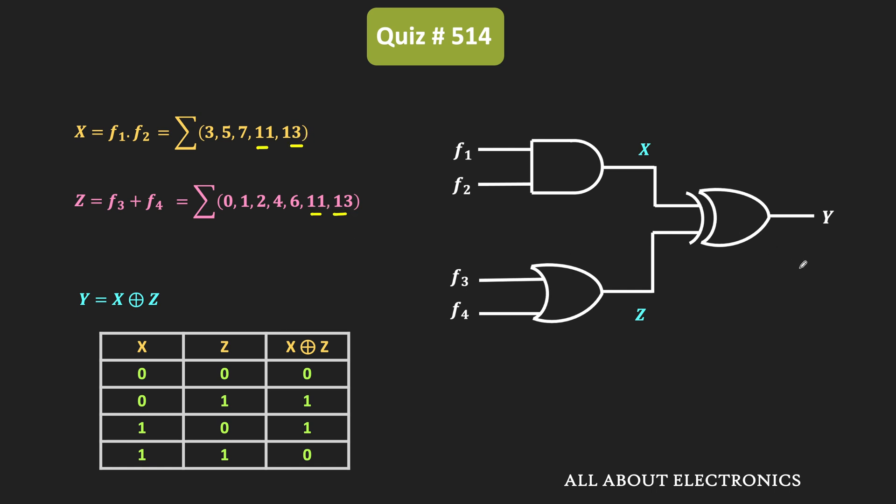That means here, the output y will contain all the minterms except 11 and 13. And therefore, if we see the output function of y, then it will contain the following minterms.